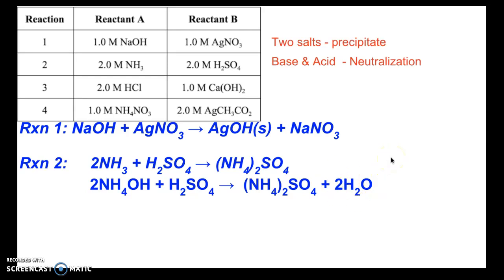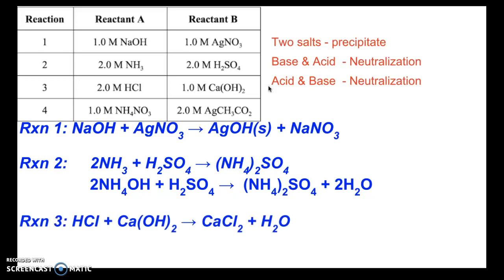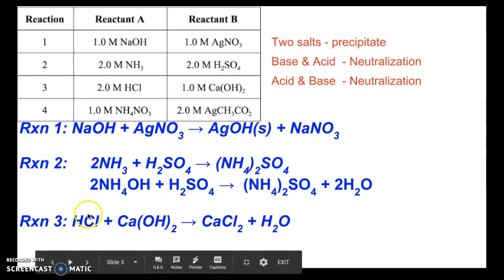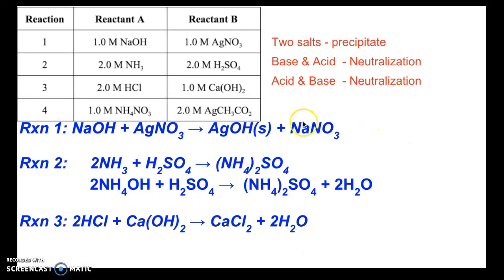For reaction 3, HCl is an acid and calcium hydroxide is a base, so this is a neutralization reaction. Write down the balanced chemical equation — start with the reactants and predict the products, then check if it needs balancing. The balanced equation requires twice the amount of HCl, forming two waters, so our balanced chemical equation reflects a 2:1 acid-to-base ratio.